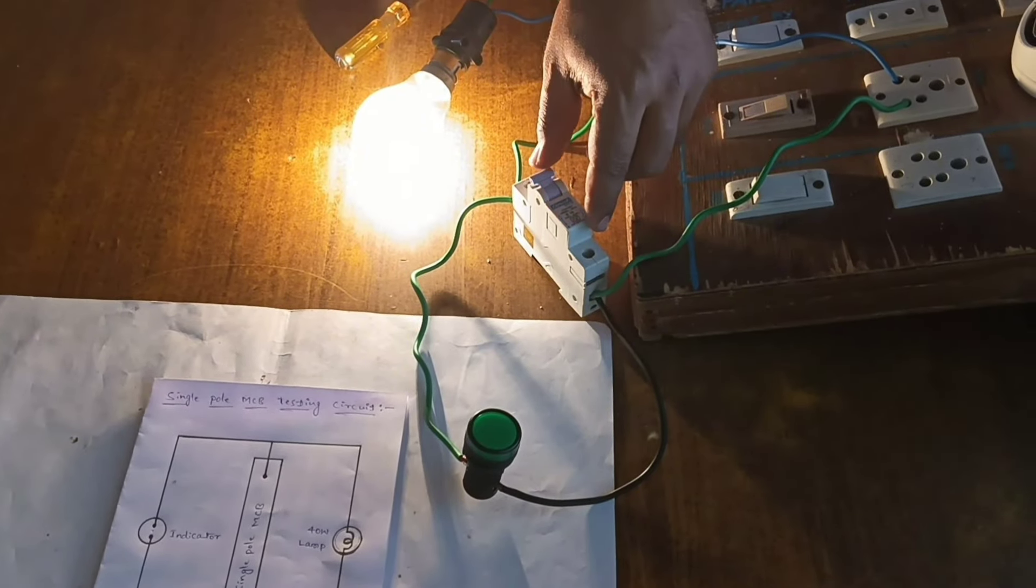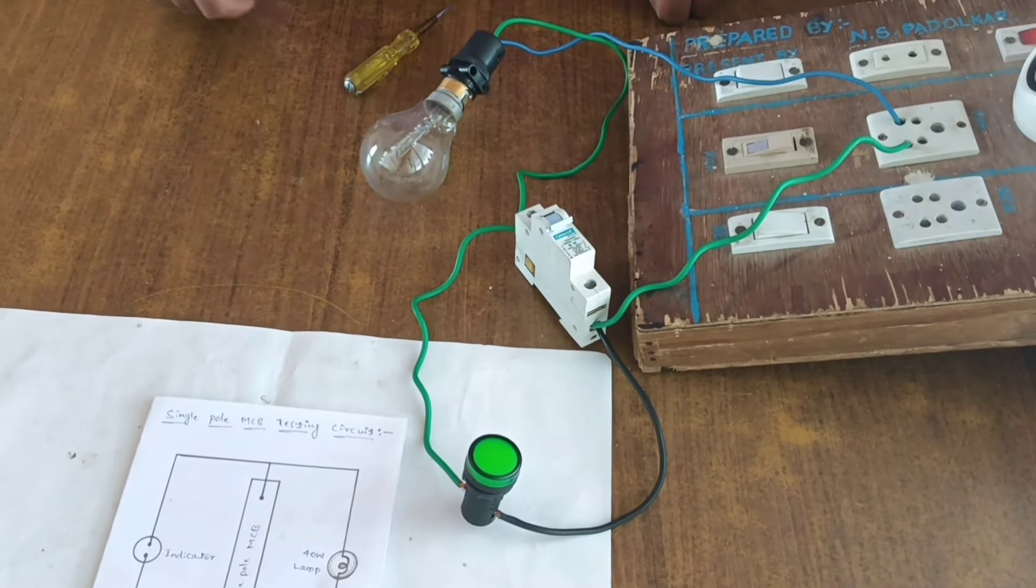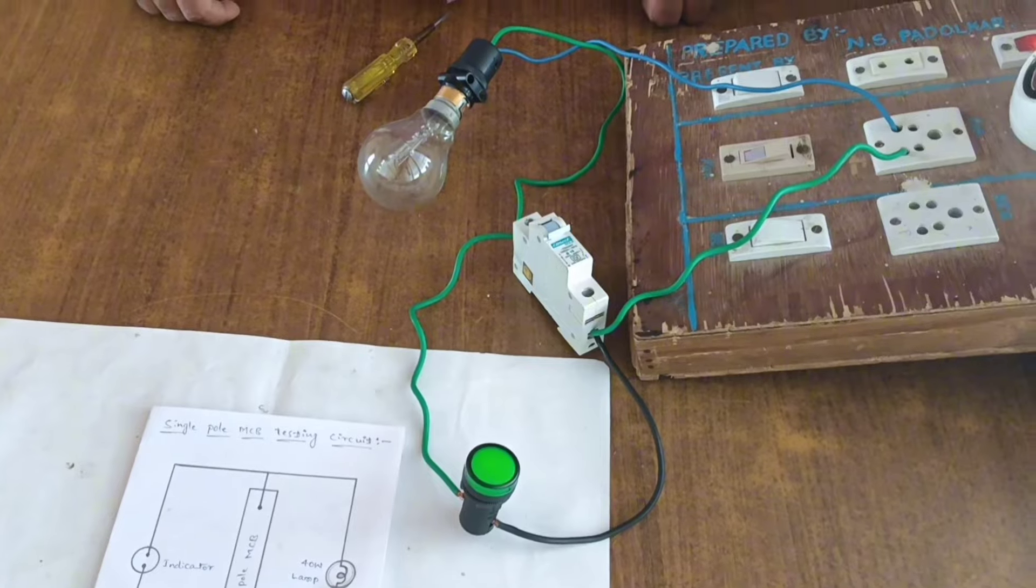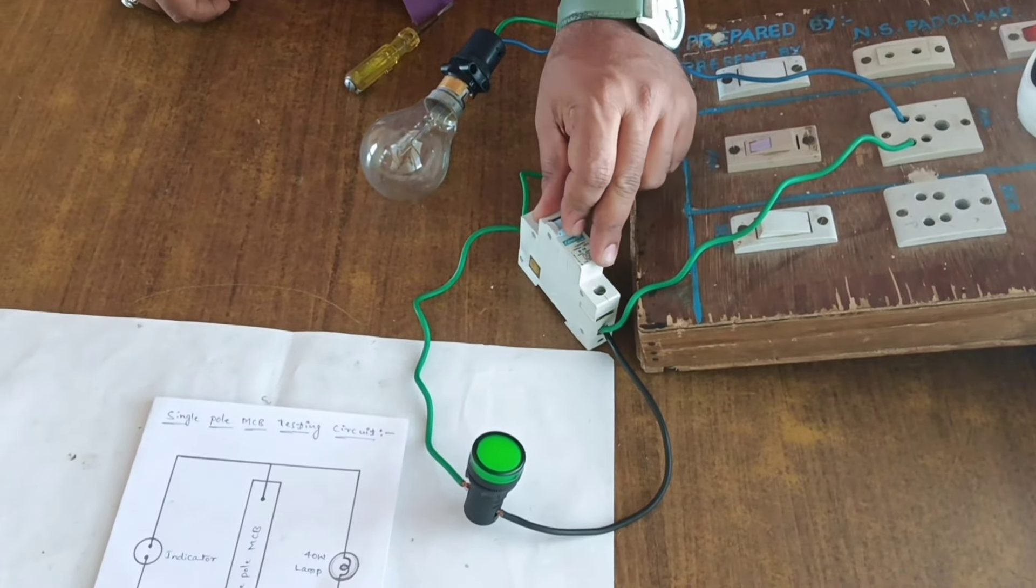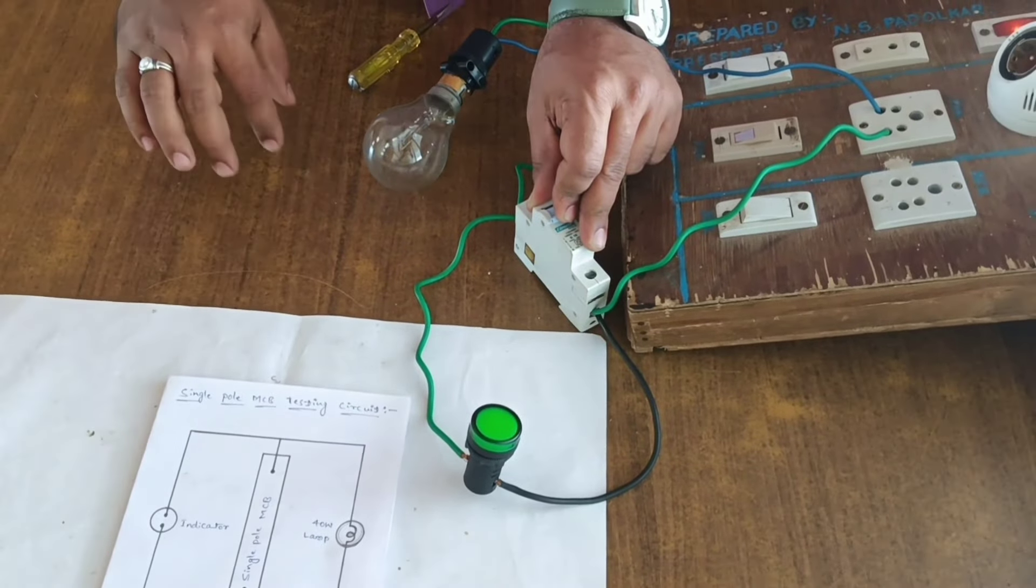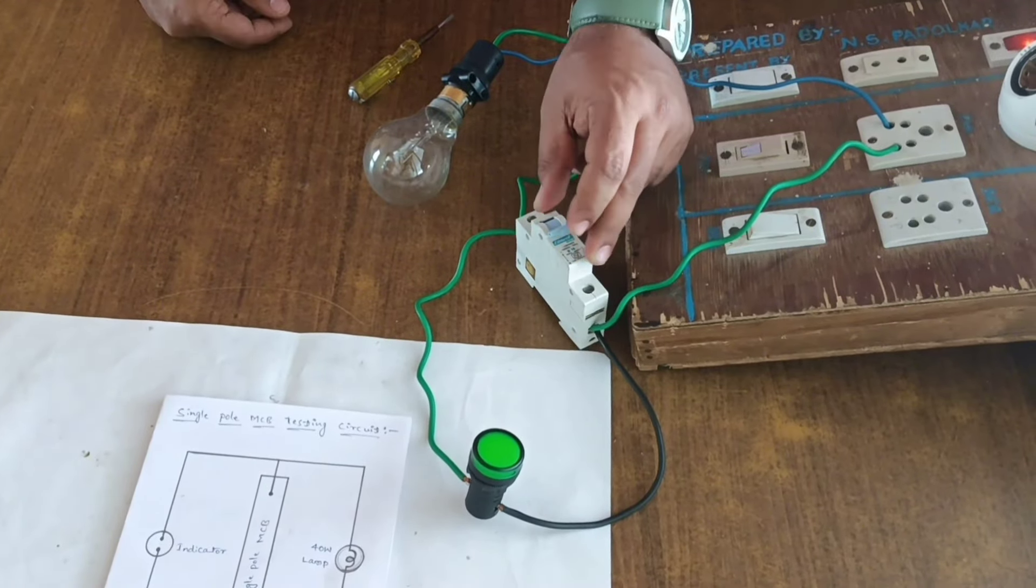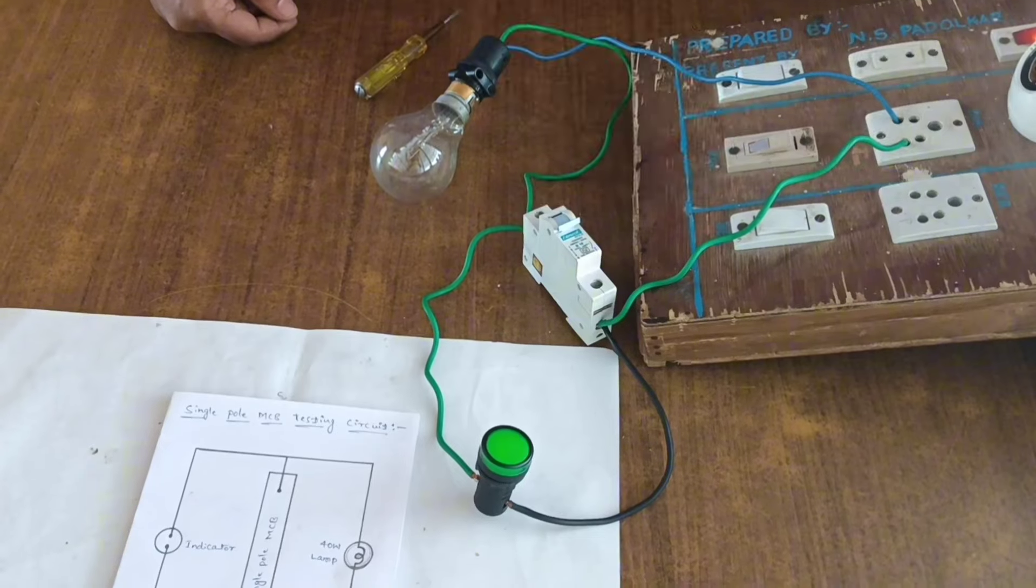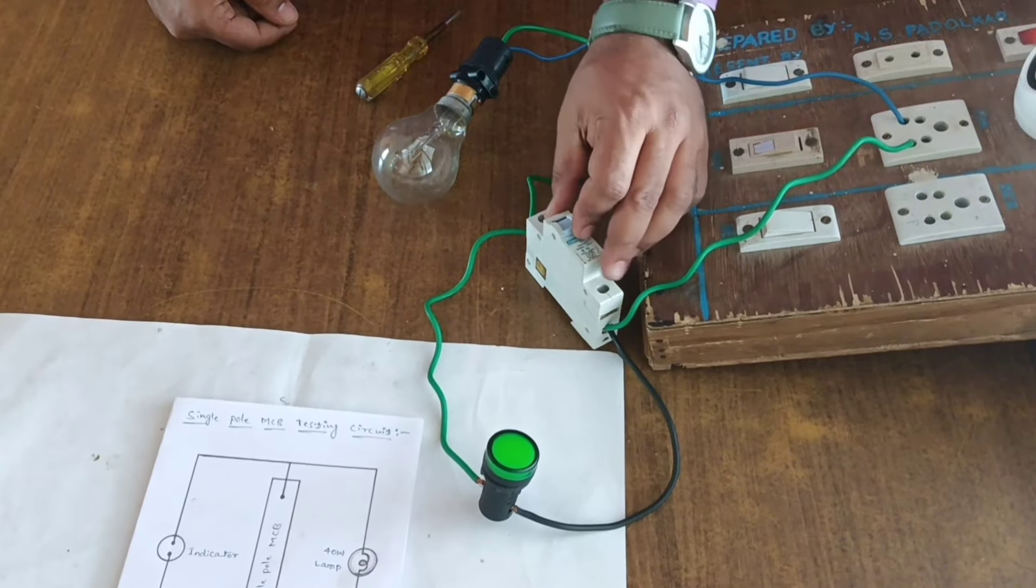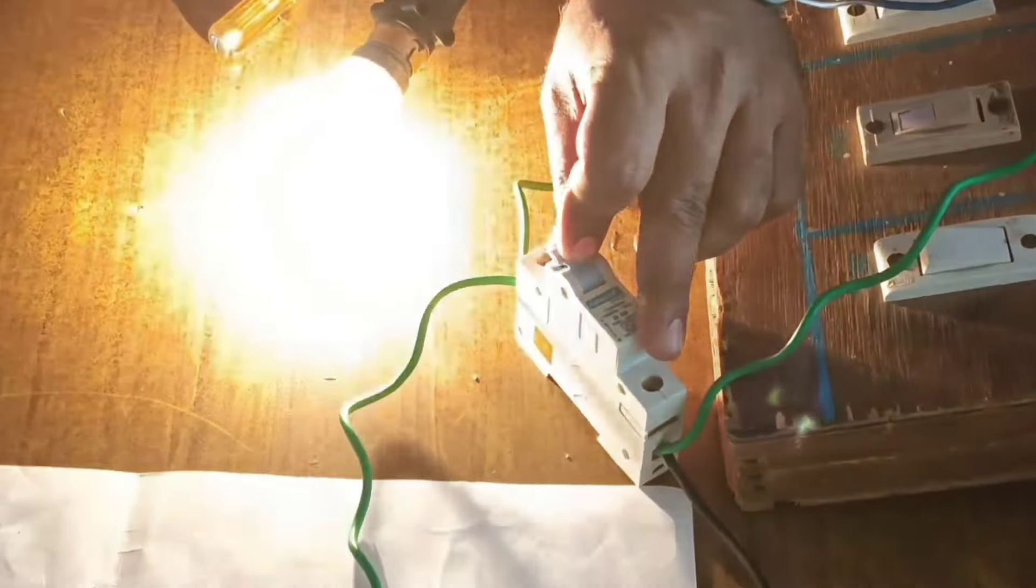When MCB off, indicator is on, means MCB in off condition. Just by connection like this, single pole MCB testing can be very easy. Your MCB working or not working, you can test in your home using this circuit diagram.